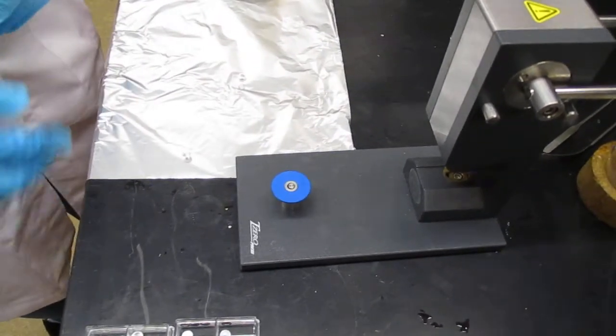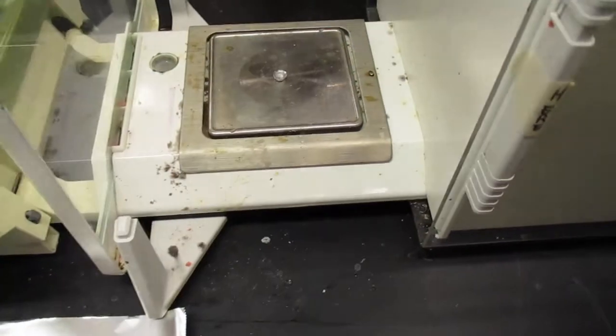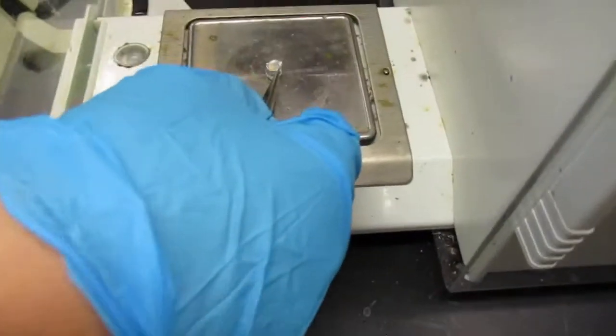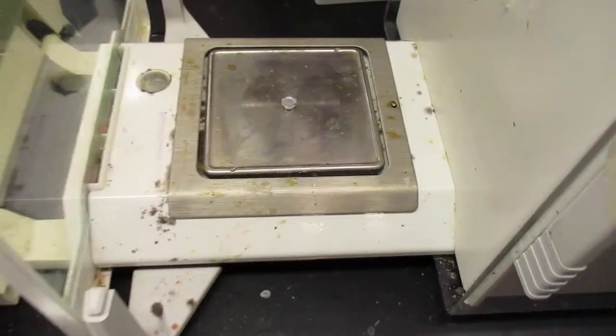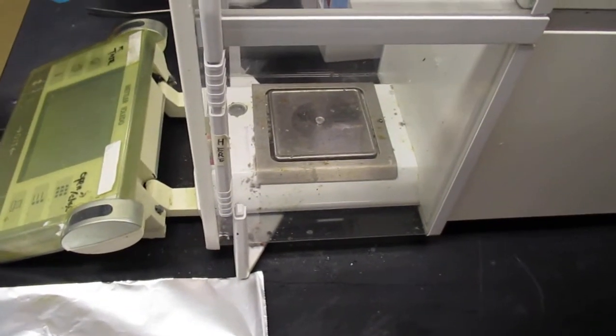Now grab a brand new pan and lid, and we're going to place it on the scale, so both the pan and the lid empty, and we're going to record the mass of that. Write that down in your notebook. This will be for sample one.